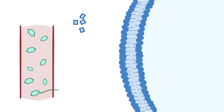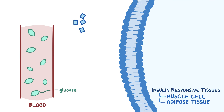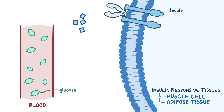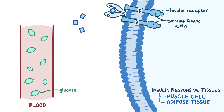Insulin's main function is to facilitate the transport of glucose from the blood into the various insulin-responsive tissues like muscle cells and adipose tissue. This hormone binds to insulin receptors on the surface of the cell membrane. These receptors have two alpha and two beta subunits. Alpha subunits are located outside of the cell and they bind insulin, while two beta subunits are located within the cell and they have tyrosine kinase activity, which carries signals into the cell.